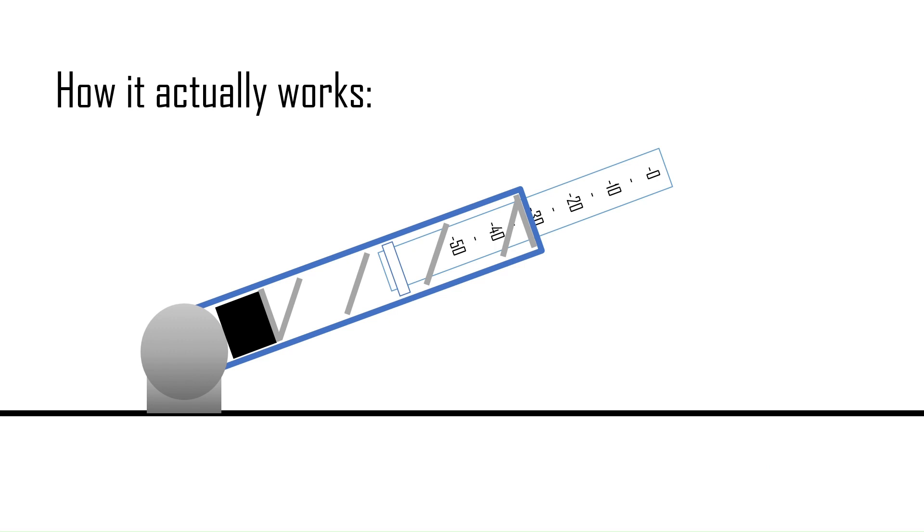Which is smart, because then you can pull the pencil away and still read the pressure it saw. And there you go. That's how pencil pressure gauges work.